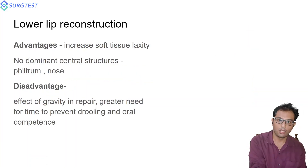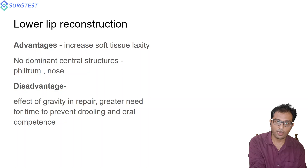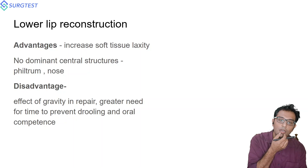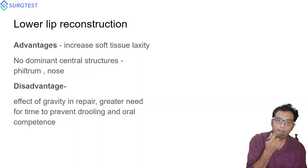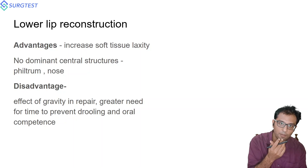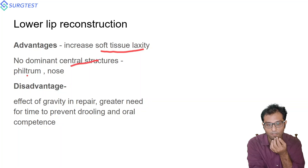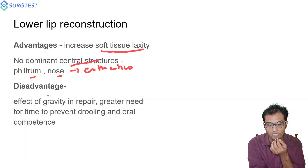Before understanding lower lip and upper lip reconstruction, note that the lower lip is more related with competence or function, whereas the upper lip is more related with aesthetics. The advantage of lower lip reconstruction is increased soft tissue flexibility with no dominant central structures like the philtrum or nose. The disadvantage is the effect of gravity on repair, with chances of drooling and loss of oral competence.